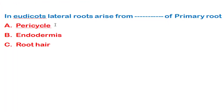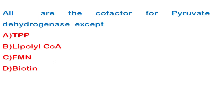The next question: in plants like Arabidopsis and tomato, lateral roots arise from which tissue? The correct answer is the pericycle of the primary root.